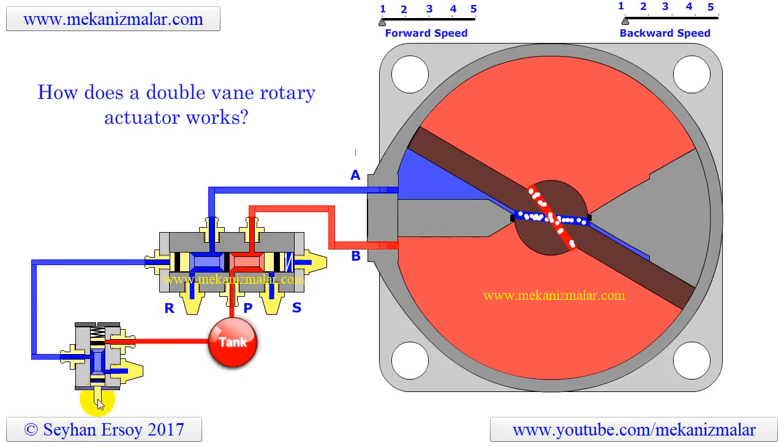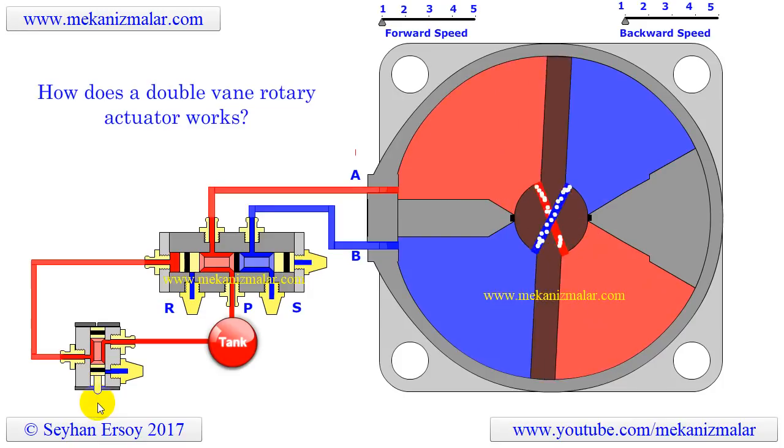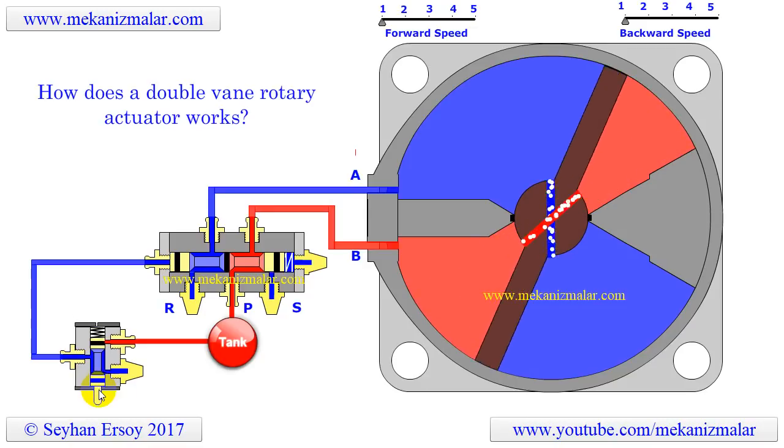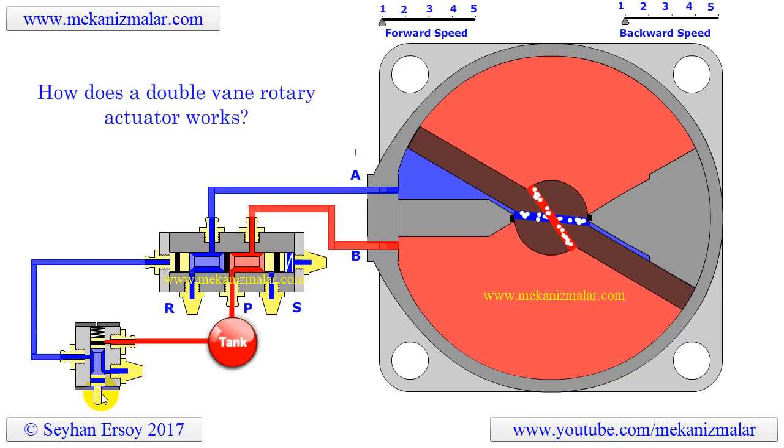As is always the case, when you gain something, you lose something. There's no win-win situation here. In the double-vane rotary actuator, we lose rotation range.